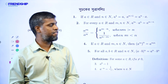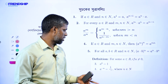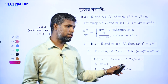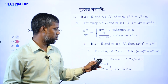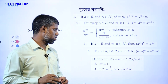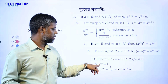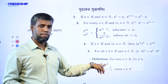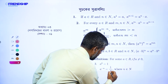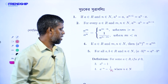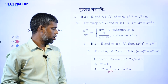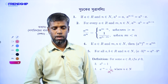Now, we have a definition for some a belongs to R. If a is not equal to 0, this is very important. a is not equal to 0. a to the power 0 is not considerable. So, a to the power 0 minus 1. a to the power minus n equals 1 by a to the power n, where n belongs to N.